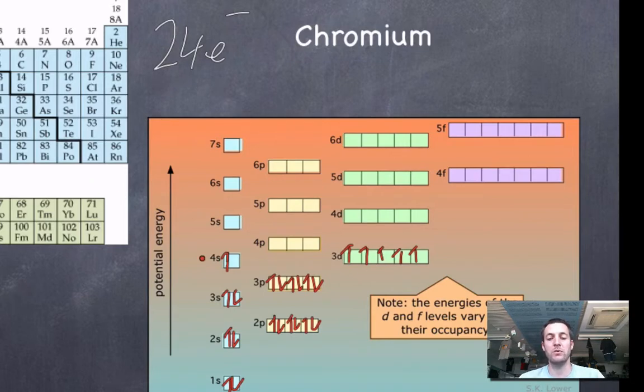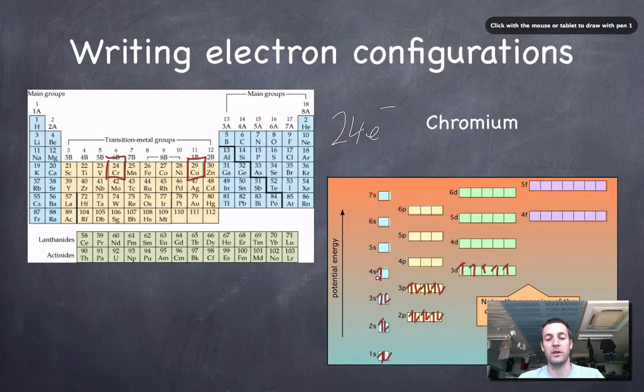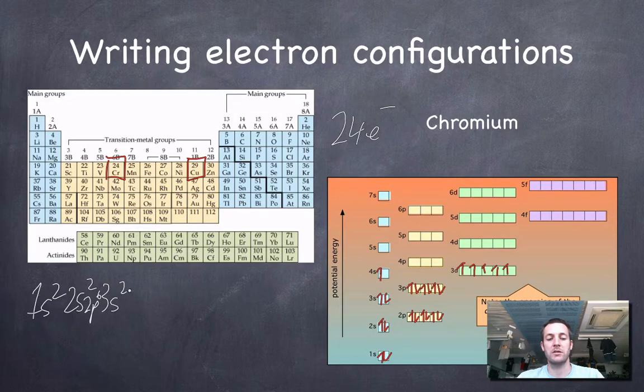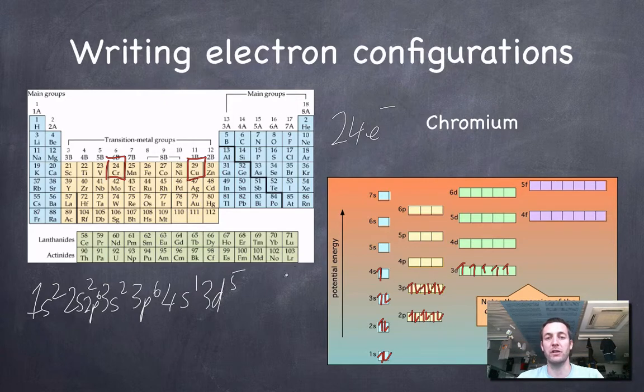So whereas we might expect it to be 4s2 3d4, it actually becomes 4s1 3d5. So 1s2 2s2 2p6 3s2 3p6 4s1 3d5, or 3d5 4s1, whichever way you prefer to write it.